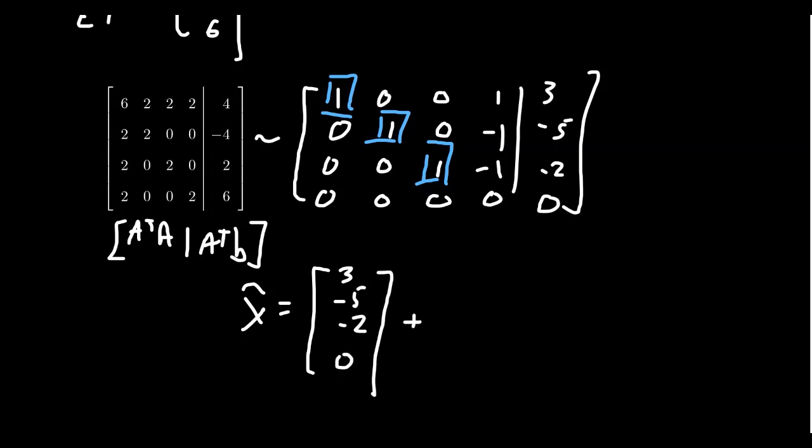And then we have one free variable, which coincides with x4. And that free variable, if we just look at the negation of the fourth column, we get negative 1, 1, 1, and 1. So this is the general solution. So this is the general least squares solution.